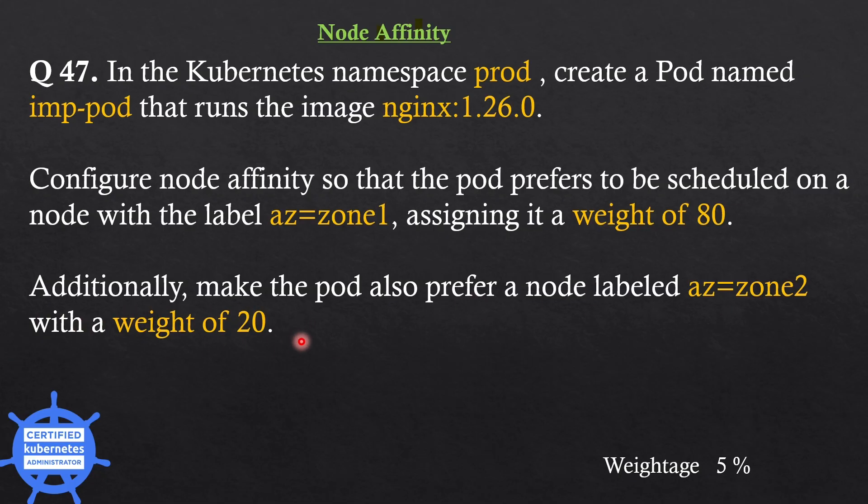If we apply node affinity as per the question, Kubernetes will prefer scheduling the pod on nodes labeled az equals zone 1. If nodes in zone 1 are not available, Kubernetes should then prefer nodes labeled az equals zone 2. Without further delay let's go to the cluster.